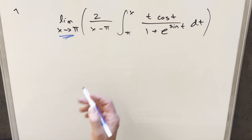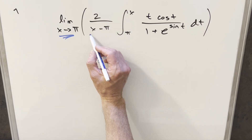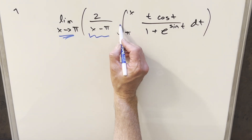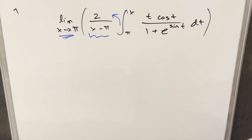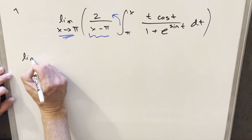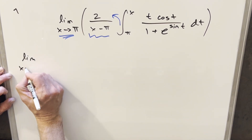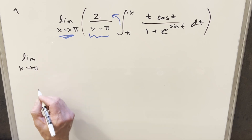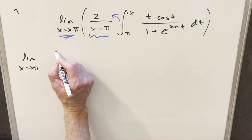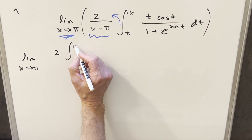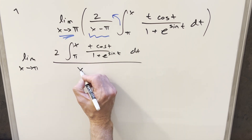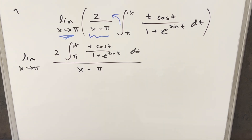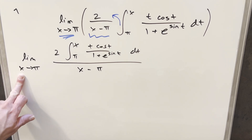To get started, I want to use the fact that we do have a fraction here. I can rewrite this and bring the whole integral into the numerator. So we'll have our limit out front as x approaches pi, and then write this as 2 times this integral, with the whole thing over x minus pi.